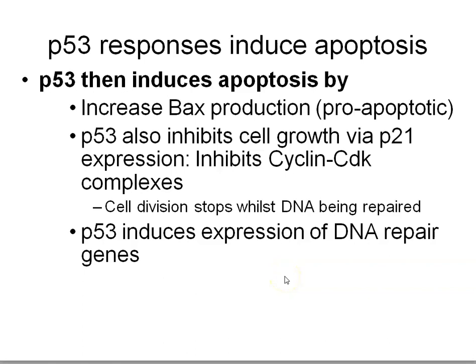Alternatively, other cancer cells mutate the p21 gene so that even if p53 is functional, p21 cannot be expressed in response to DNA damage, and therefore a damaged cell will continue to enter M phase and undergo mitosis. Other tumors inactivate Bax production so that even if p53 is proficient, if Bax is inactive the cell can no longer undergo normal apoptosis.